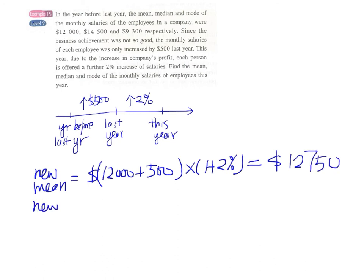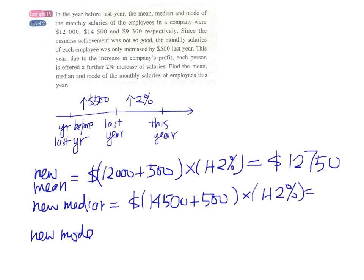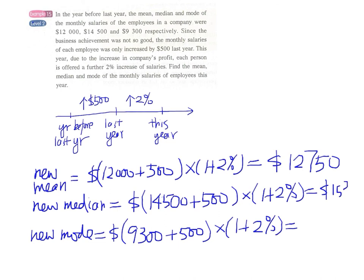And we can repeat this for the new median and new mode. We increase this by 500, and then multiply this by 1 plus 2%. And the new mode, we did the same. So we have $15,300 for the new median, and for the new mode, we have $9,996.